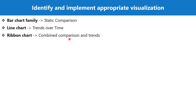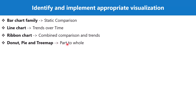If you have a scenario where you want to show part-to-whole — where you want to show a certain part out of the whole distribution — then there are certain visuals like donut chart, pie chart, and tree map that can be used. The static comparison using a bar chart can also be used for part-to-whole. Whenever you are trying to show a ratio or a percentage, these visuals are important.